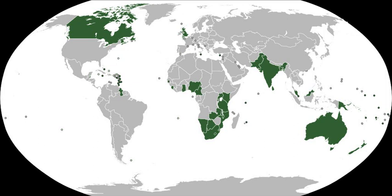Commonwealth countries share many links outside government, with over a hundred Commonwealth-wide non-governmental organizations, notably for sport, culture, education, law and charity. The Association of Commonwealth Universities is an important vehicle for academic links, particularly through scholarships, principally the Commonwealth Scholarship, for students to study in universities in other Commonwealth countries. There are also many non-official associations that bring together individuals who work within the spheres of law and government, such as the Commonwealth Lawyers Association and the Commonwealth Parliamentary Association.